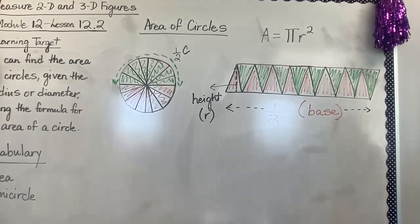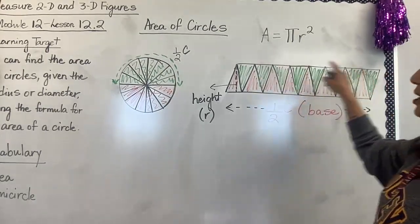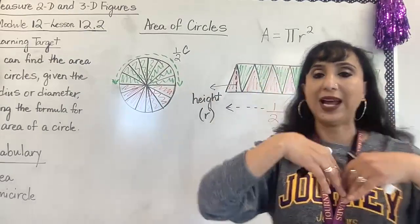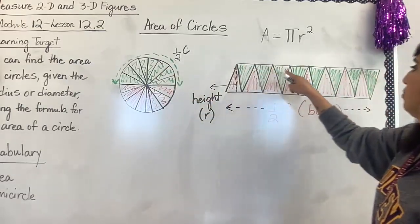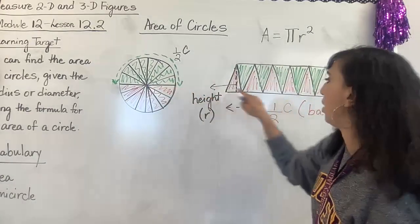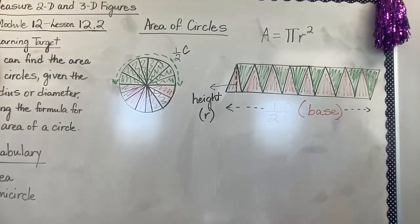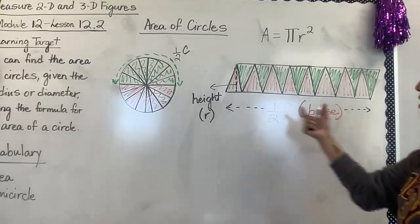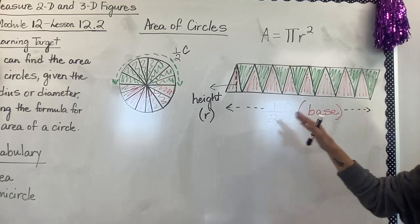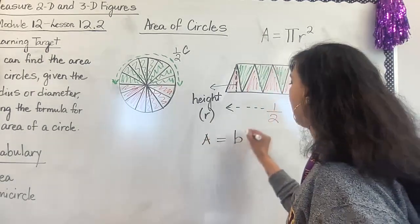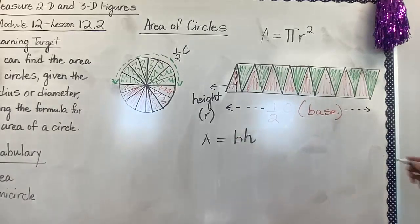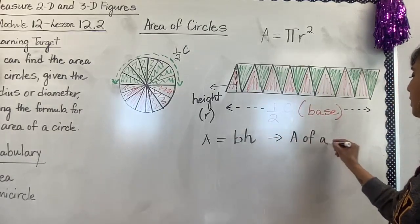And you can then use the formula for the area of a parallelogram to derive the formula for the area of a circle. So let's look at this — there are eight sections, and when I make them join like this, I have 16 parts here. This is the top half of the circle and this is the bottom half, so I'm rearranging the sections and it looks like a parallelogram. This part over here is half the circle, so this is the base of the parallelogram, and then this is the height. We know that the area of a parallelogram is base times height.